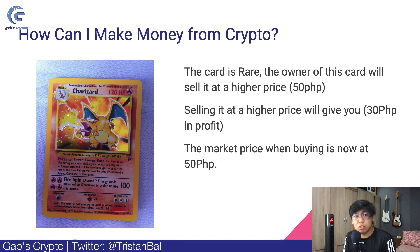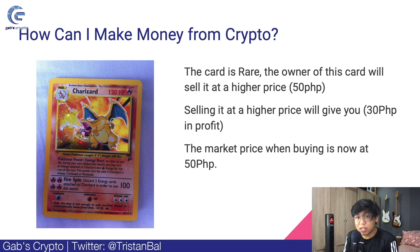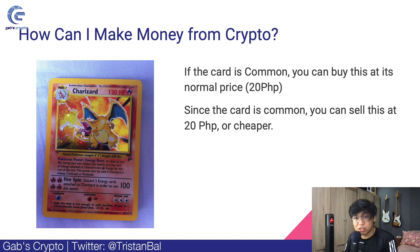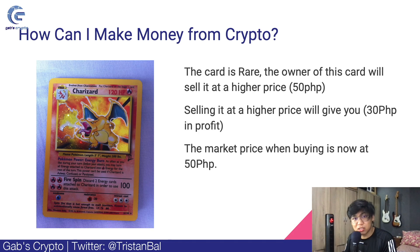But let's say over time, production of the Charizard card stops and there are very few left anywhere in the world. Now if you have a Charizard card, you won't sell it cheap because it's become very rare. In this case, you can sell it at a higher price — say 50 pesos — because it's so rare. That gives you 30 pesos in profit: from the original price of 20 pesos, you now sell it at 50 pesos. The market price of the Charizard card is now 50 pesos. You can see the concept — you bought it at 20, sold at 50 because it became in-demand and rare, creating scarcity.